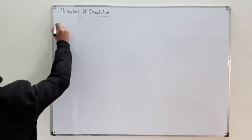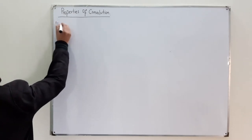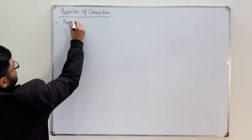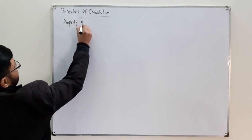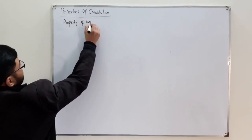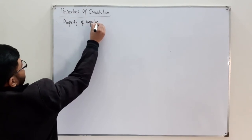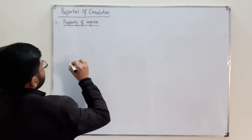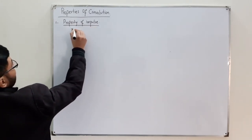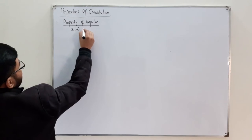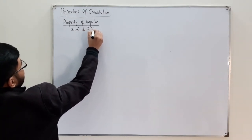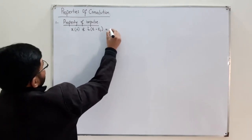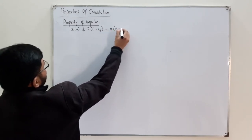The first property we discuss today is the property of the delta function — the impulse. Based on the sampling property, if you have a signal x(t) convolved with an impulse signal δ(t − t₁), this gives you x(t − t₁).